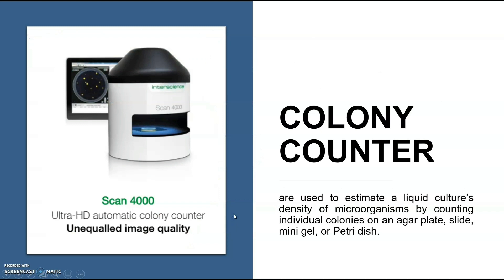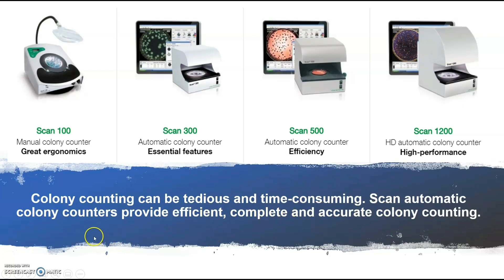Another modern laboratory tool is the colony counter. Colony counters are used to estimate a liquid culture's density of microorganisms by counting individual colonies on an agar plate, slide, mini gel, or petri dish. Colony counting can be tedious and time-consuming. Automatic colony counters provide efficient, complete, and accurate colony counting. There are different types: the Scan 100 manual colony counter with great ergonomics, the automatic colony counter with essential features, and the HD automatic colony counter. The counting can be accomplished manually with touch pressure and a digital counter, or can be semi or fully automatic.